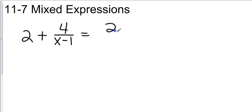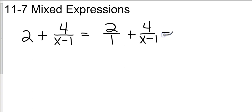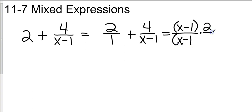Let's go ahead and take our 2 and make it a fraction. Remember the 1 is just a general everything in a fraction, so it's really kind of not even there. And so looking at the 1 and the x minus 1, our common denominator has to be x minus 1. So what do I have to do with the 2 over 1 to give it a denominator of x minus 1? Well, I have to multiply top and bottom by x minus 1.